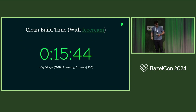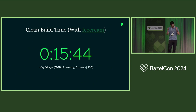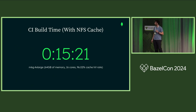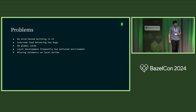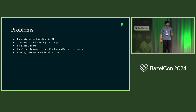One important thing about Ice Cream: it uses the same machines your teammates are also compiling on. So it's very possible that Zach and I are both running a compile at the same time — my actions go to his computer and his come to mine. So it doesn't really help much unless there are a lot of computers sitting idle. In CI, we don't use remote execution but we do use remote caching. With a 95–96% cache hit rate, it takes about 15 minutes to run in CI. The problems with this system are: no distributed building in CI, Ice Cream load balancing has a lot of bugs, there's no global cache, local development is frequently polluted, and there's missing telemetry on local builds.